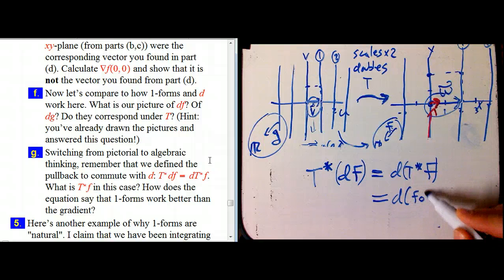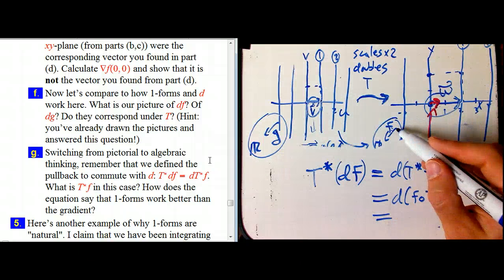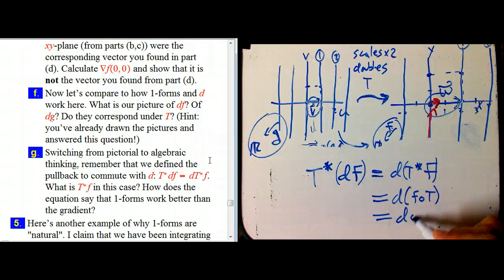Well, let's see. So T star df is d T star f. What is T star on a function? Remember, that was just a fancy way of saying f composed with t. Oh, hey. The reason, the explicit way to say that f and g correspond as functions here is to say that f composed with t is g.